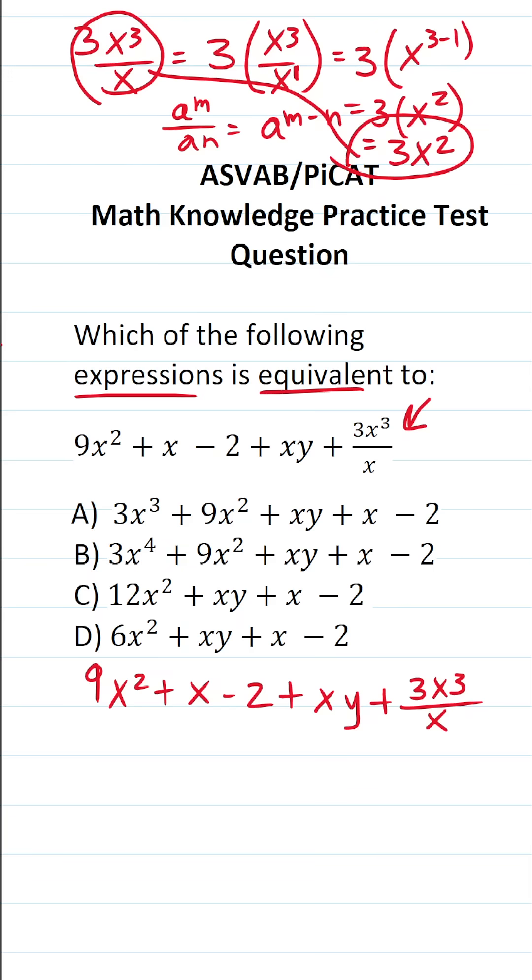So let's go ahead and replace that. This becomes 9x squared plus x minus 2 plus xy plus 3x squared. Now simplifying this expression is pretty simple. Let's combine like terms. 9x squared and 3x squared are like terms. So let's combine them to be 12x squared. Let's cross them out.